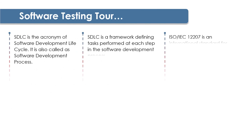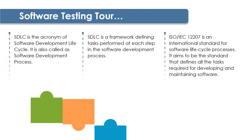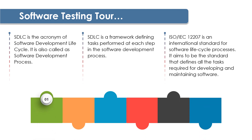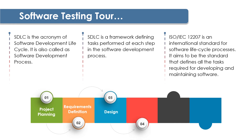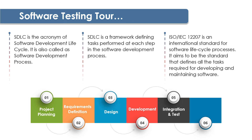Let me briefly cover the course structure and what we would be learning in testing. We will talk about SDLC — software development life cycle — which has various phases: Phase 1 is project planning, Phase 2 is requirements definition, Phase 3 is design, Phase 4 is development or coding, Phase 5 is where all small modules are integrated and then comes testing. Once testing is done, it moves to the last stage, which is installation and acceptance.